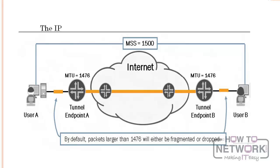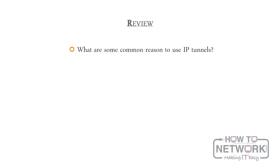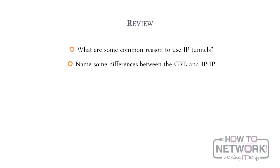Let's review. What are some common reasons to use IP tunnels? IP tunnels are used to carry traffic that otherwise is not routable over a public network like the internet. The traffic could include IPX, AppleTalk, or IP traffic that uses RFC 1918 addressing. You can also use IP tunnels as a backup link in case failure occurs. Some differences between GRE and IPIP include the encapsulation format used by each tunneling protocol and the types of protocols each can encapsulate.